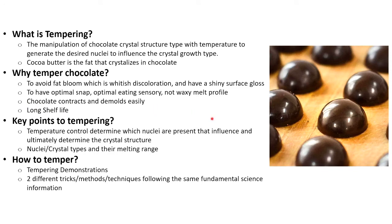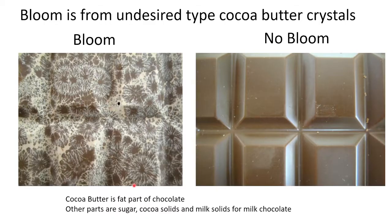The key points to tempering are temperature and understanding the melt profiles of the different crystals and nuclei. Later I'm going to show you how to temper using two different demonstrations. Whether you call it a trick, a method, or a technique, all of it follows the same fundamental science. Bloom is the whitish discoloration on chocolate — seen on the picture on the left — and on the right, that's chocolate without bloom. It should be shiny.